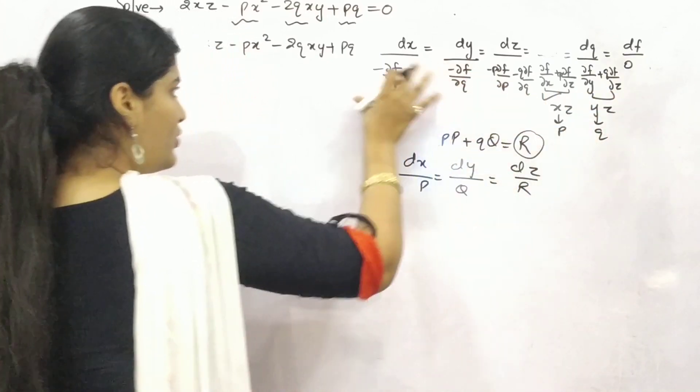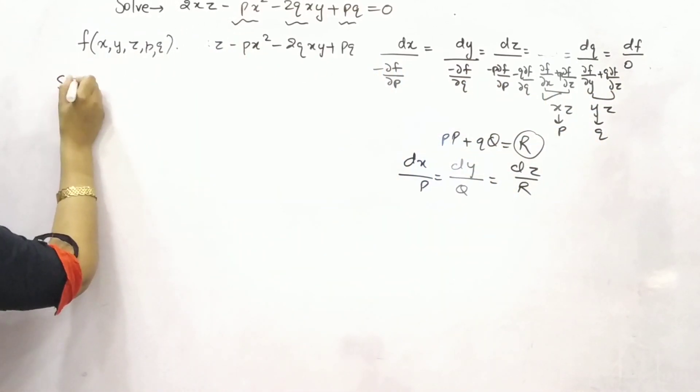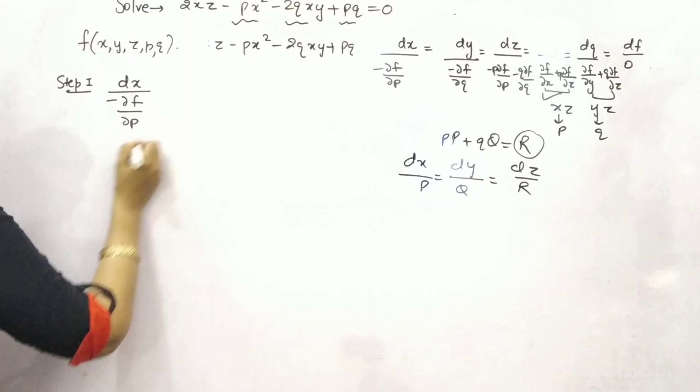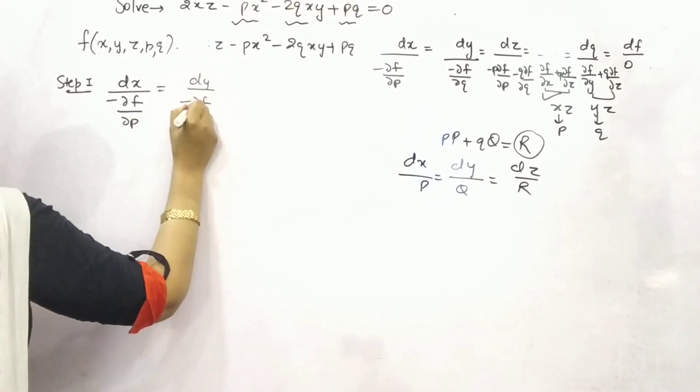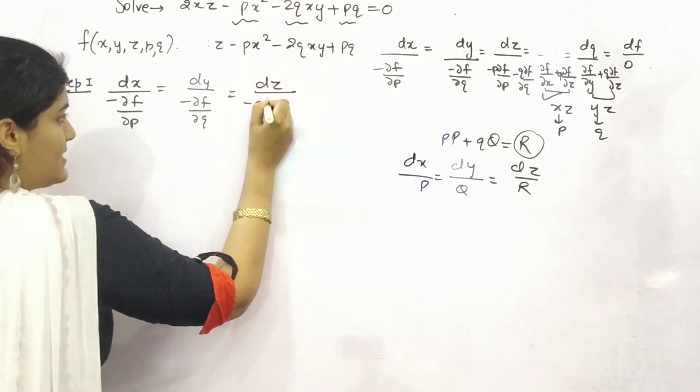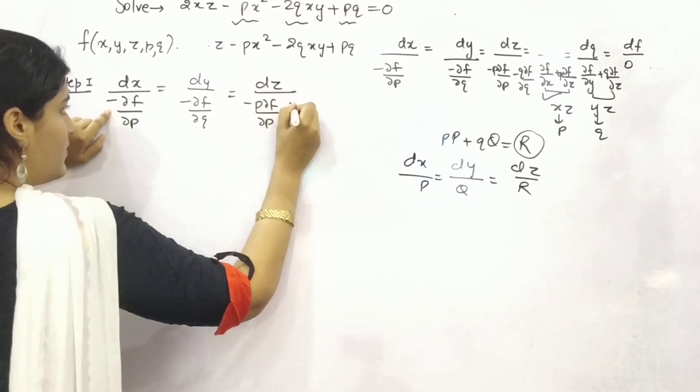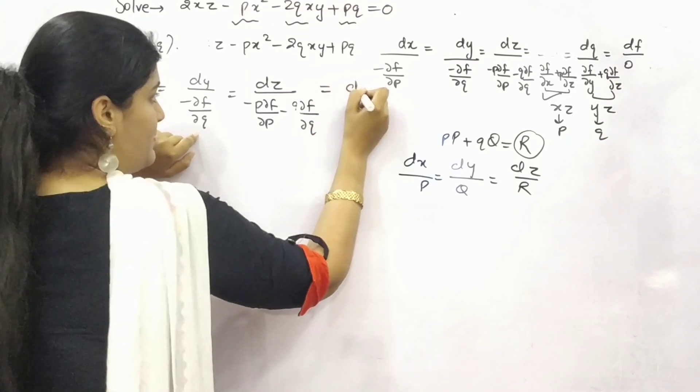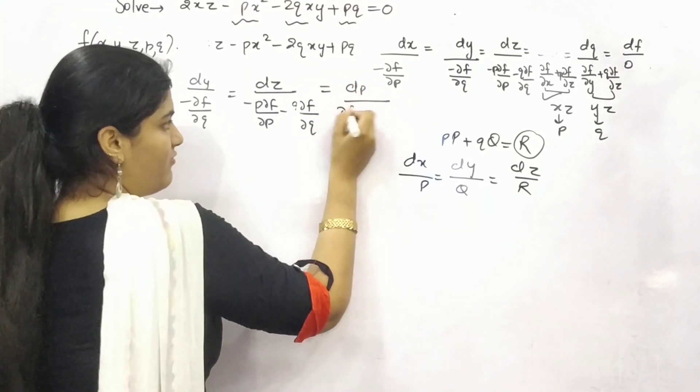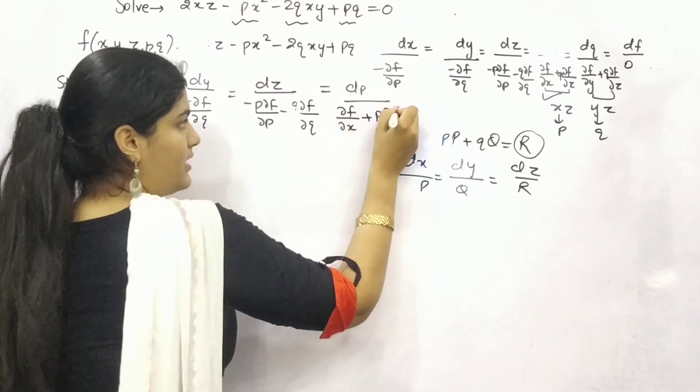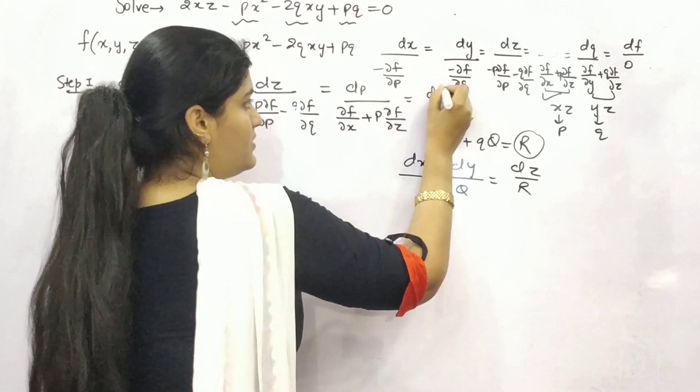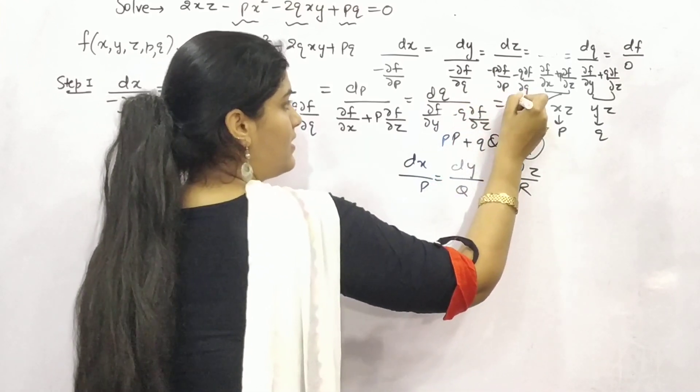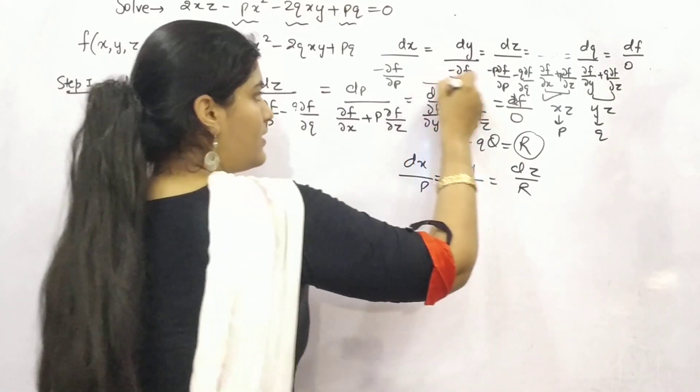So firstly df partial differentiation of f with respect to x plus p partial differentiation of f with respect to z. So these are for x, z. This is for y, z. This is taking p with dz, this is taking q with dz, and here always zero. Let's begin. So you need to find all these values and put them down into this formula. So step number 1. This is your formula.